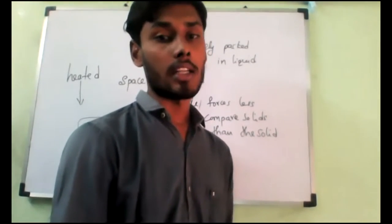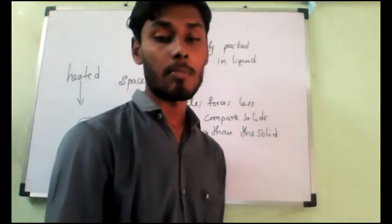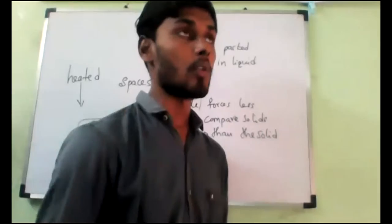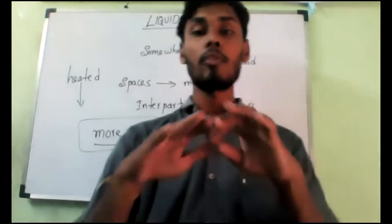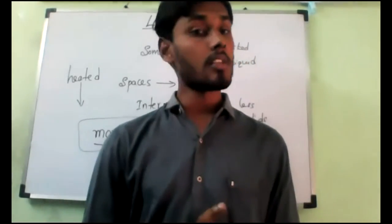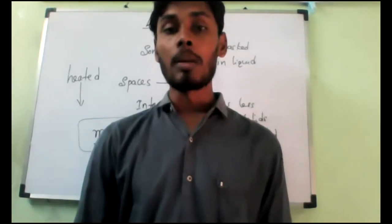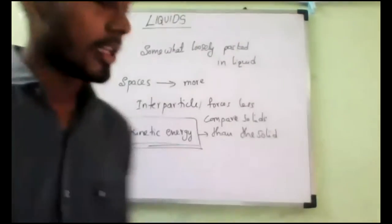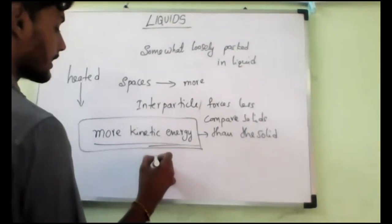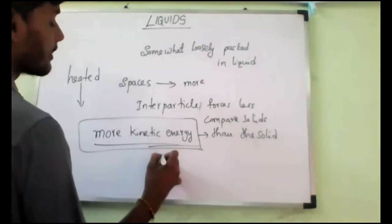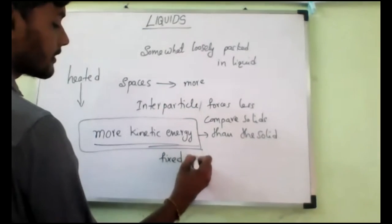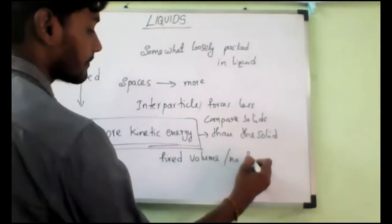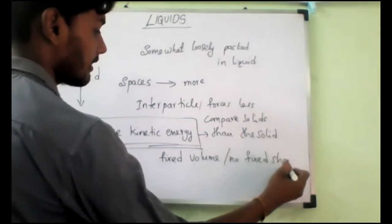If we pour liquid into different containers, they will get a different shape, but with a fixed volume. We have taken water as a substance. Water has a fixed volume which does not change on changing the container. In general, we can say a liquid has a fixed volume but no fixed shape. That is what you should remember.